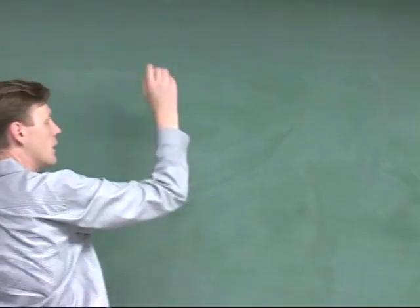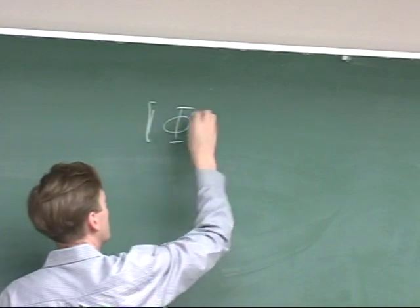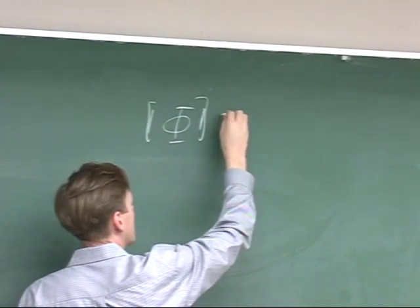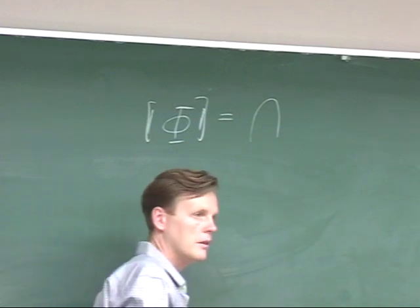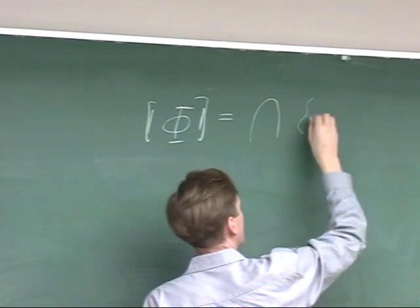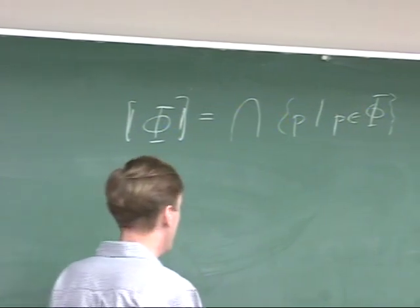There are some modifications you need to make, and it's not so clear how all of these things apply to real English sentences. To remind ourselves: if Φ is a set of sentences, the denotation of such a set is the intersection of all propositions — sets of worlds — in there.